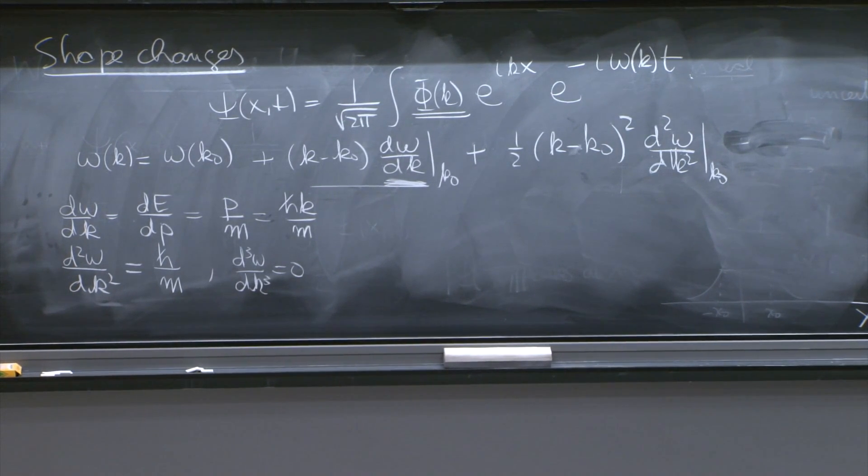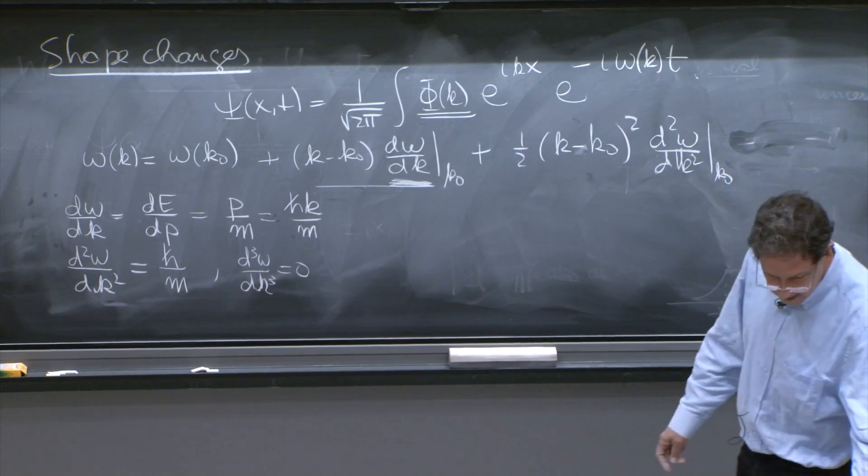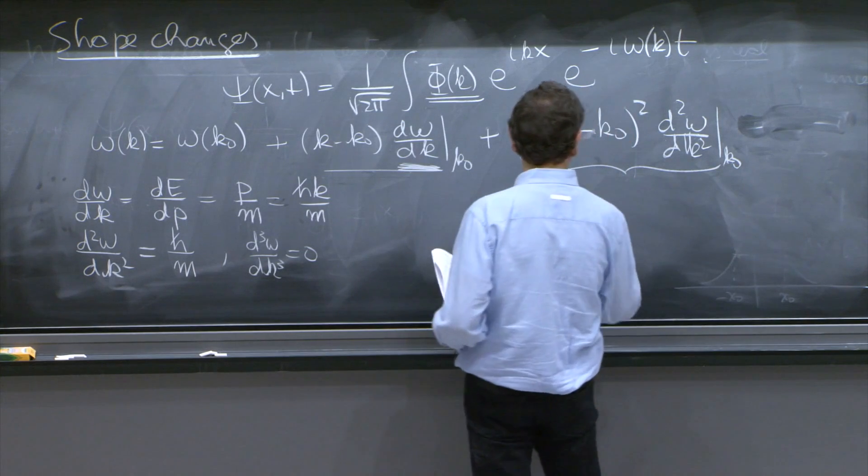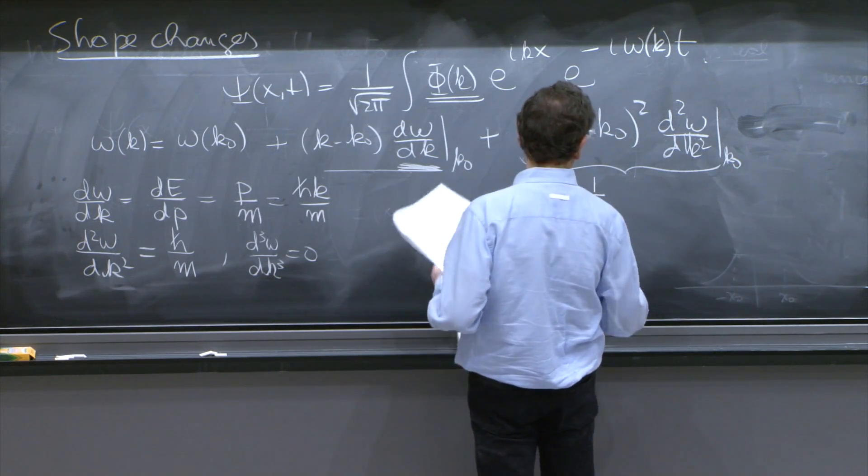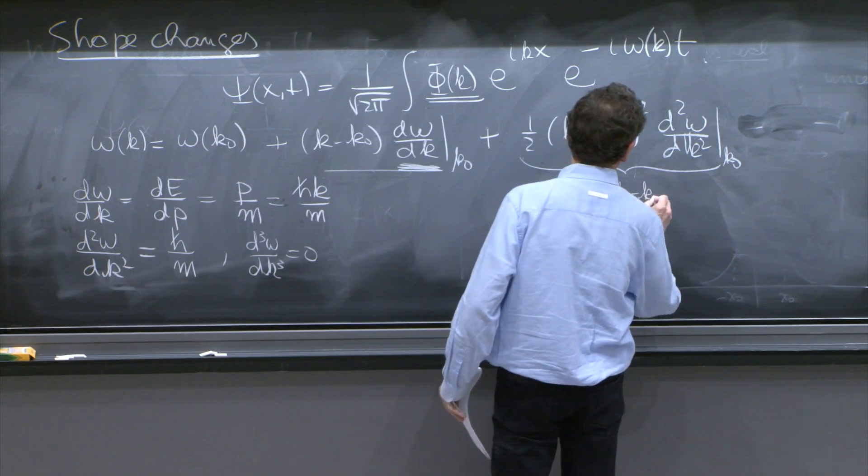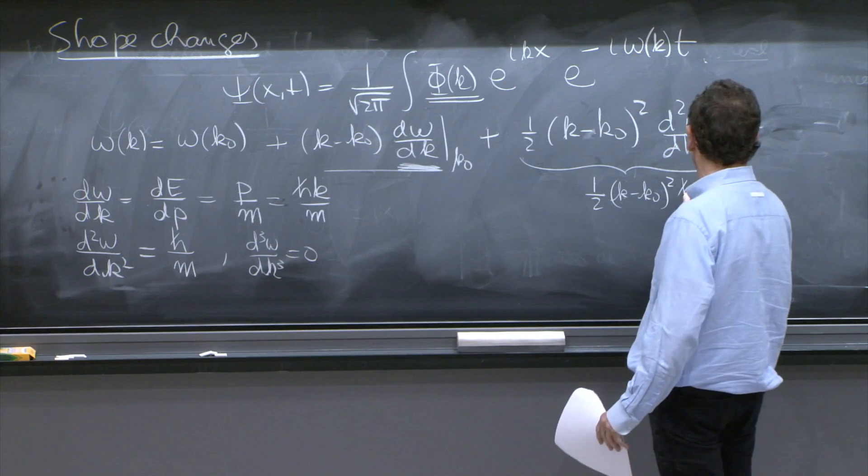Yes, the reason this happens is because there is zero number at p squared. That's right. So what is it that we get?